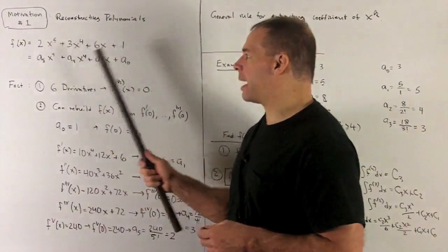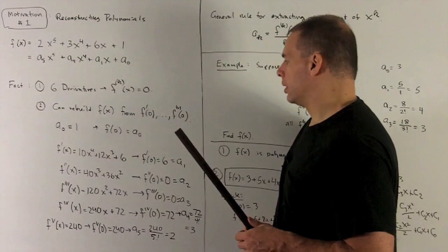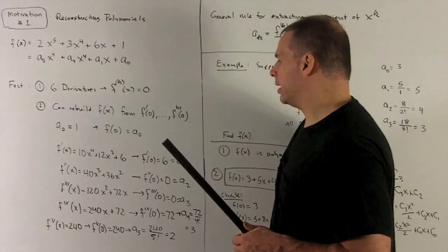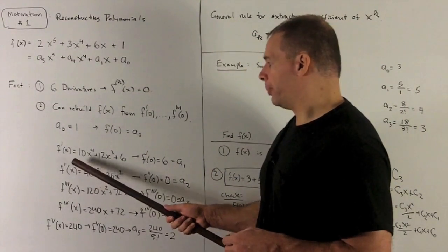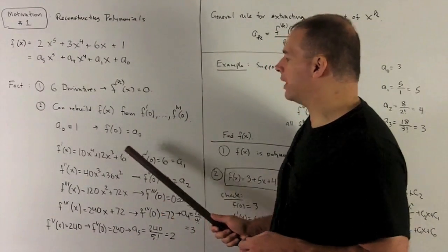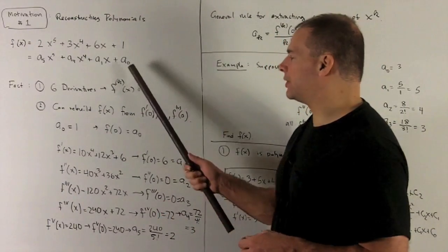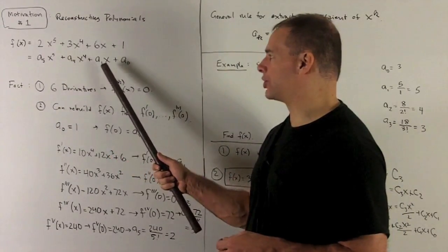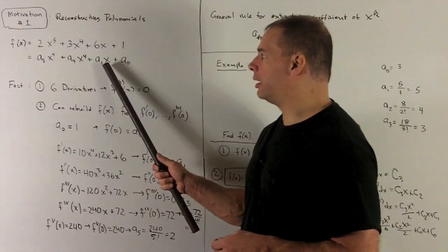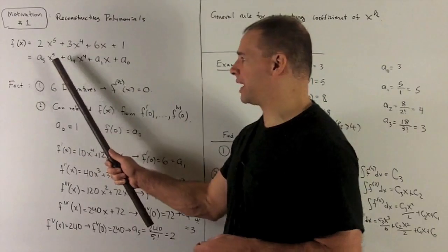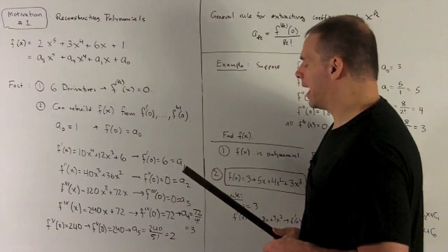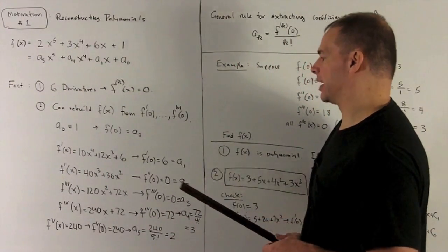Next, I can take the derivative at the top and the bottom, and then I'll put 0 into that again. f'(0), these terms are going to go away, leaving me with a 6. But we also note down here, when I take the derivative of this, we're just going to have the a1, and then these two terms will pick up that 0 and go away. So I'll have a1 equal to 6.